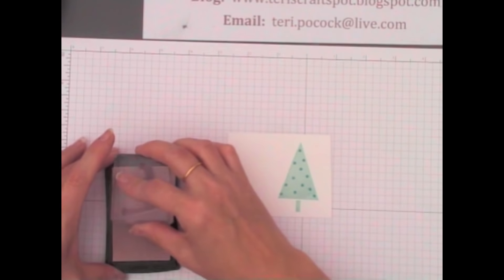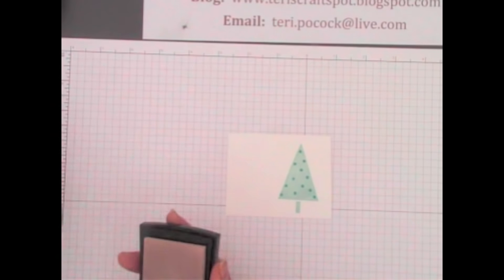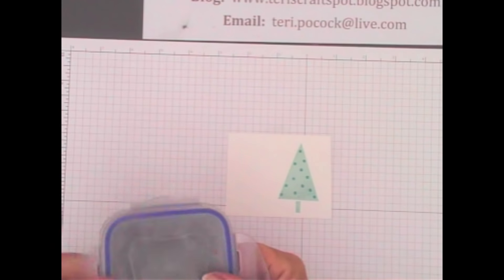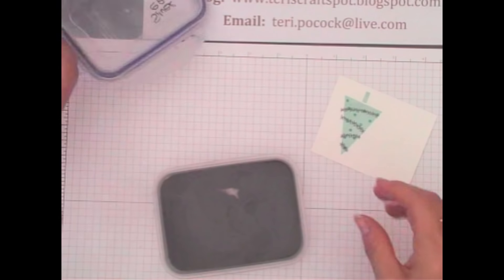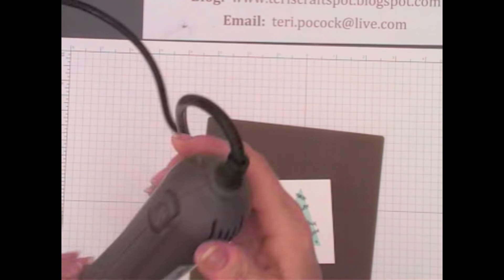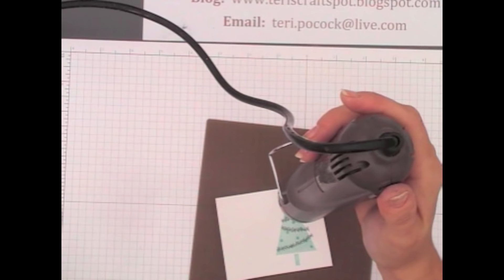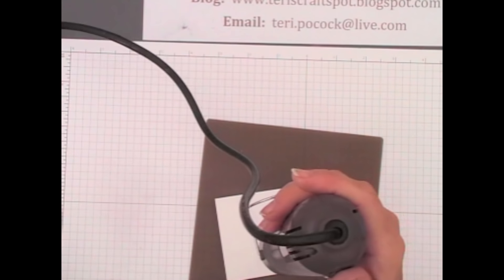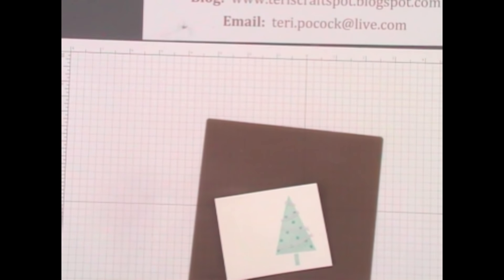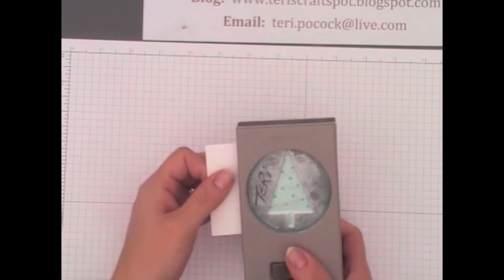Then I'm going to stamp the trim using Versamark. And then use silver embossing powder. And then heat it to melt the powder. Then I can use the tree punch to punch that out.